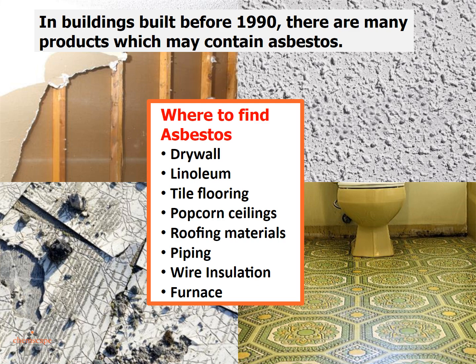In buildings built before 1990, there are many products which may contain asbestos, including drywall, linoleum, tile flooring, popcorn ceilings, roofing materials, piping, wire insulation, and furnaces.